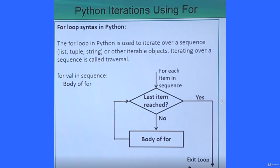Here is a flowchart. For each item in sequence, last item reached - if it is no, then body of for will get executed on that item which has been picked up. If the last item has been reached, then it will exit loop. In this way, the respective flowchart will be working on this for loop syntax in Python.